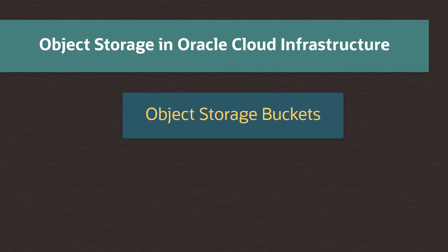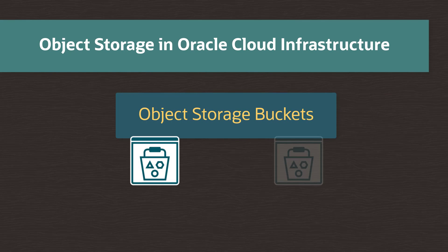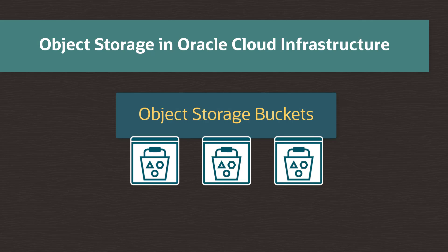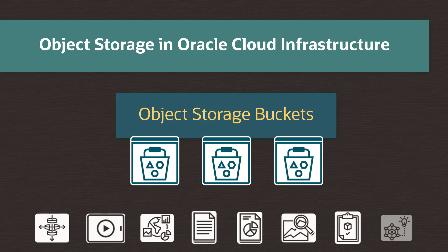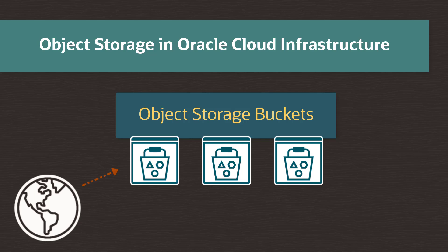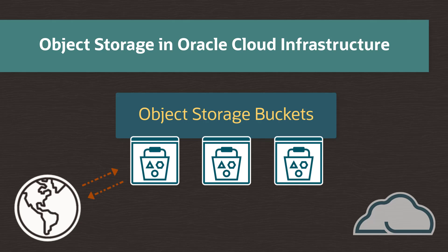Hello. In this video, we will create an object storage bucket in Oracle Cloud Infrastructure and use it to store various data files. The Oracle Cloud Infrastructure Object Storage Service can store an unlimited amount of unstructured data of any content type, including analytic data and rich content like images and videos. You can store or retrieve data directly from the internet or from within the cloud platform. The object storage is a regional service and is not tied to any specific compute instance.